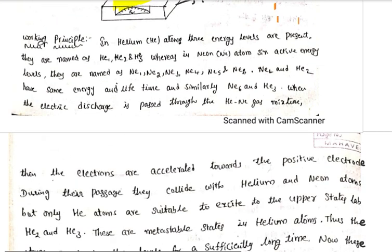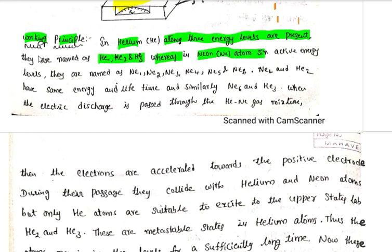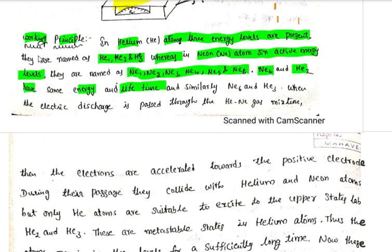Working principle: In the helium atom, 3 energy levels are present — helium-1, helium-2, helium-3. The neon atom has 6 active energy levels — neon-1 through neon-6. Importantly, neon-4 and helium-2 have the same energy and the same lifetime. Similarly, neon-6 and helium-3 have the same energy and same lifetime.